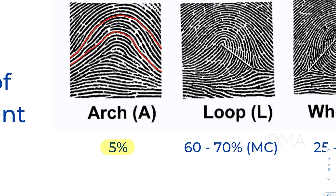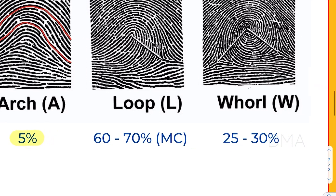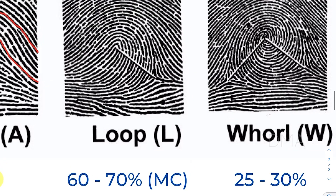Then let's look at the loop fingerprint pattern. In the loop fingerprint pattern, you can see that the ridge starts from one end and it ends on the same end —